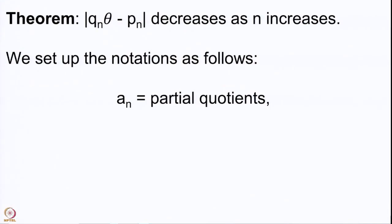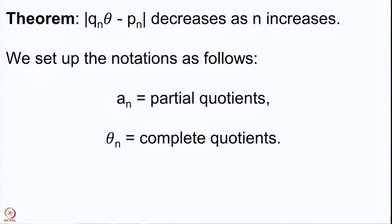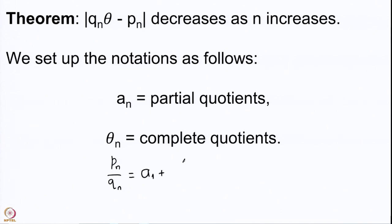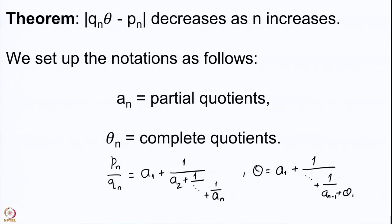Let me set up some notation because these things will keep coming again and again. Whenever we have a θ, the corresponding integers aₙ which appear in the continued fraction expansion will be called partial quotients of θ, and then we will have the θₙ, which will be called the complete quotients.